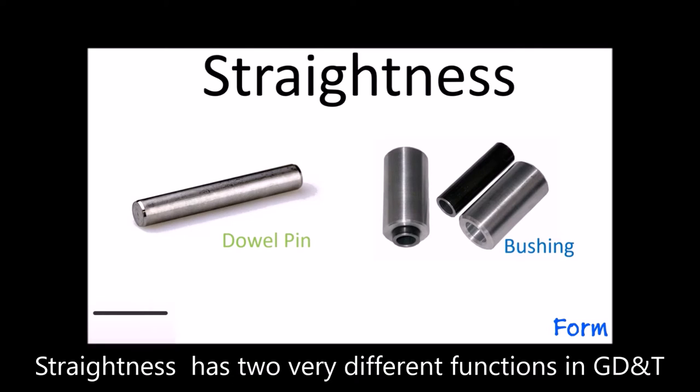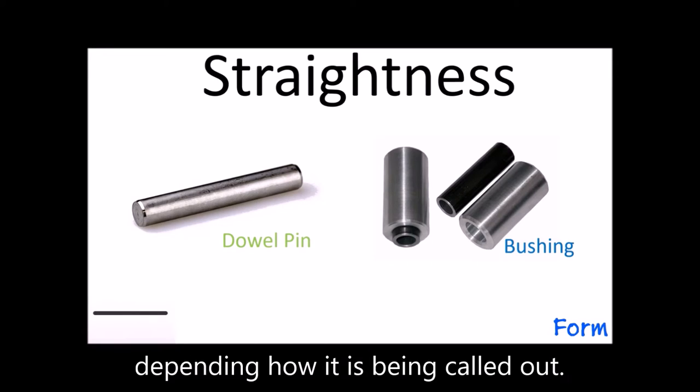Straightness has two very different functions in GD&T, depending how it is being called out.